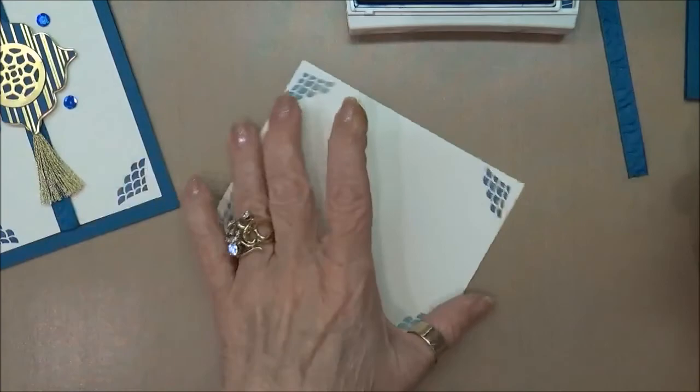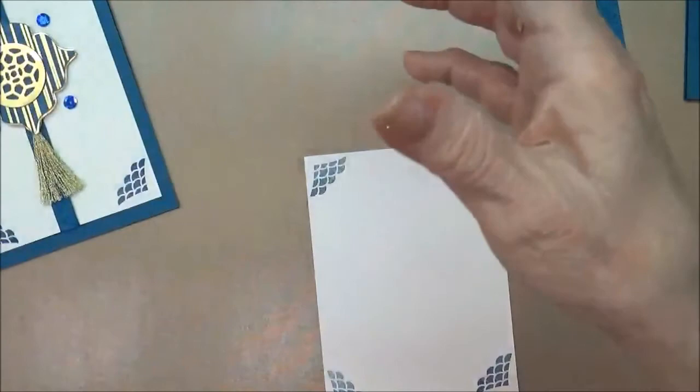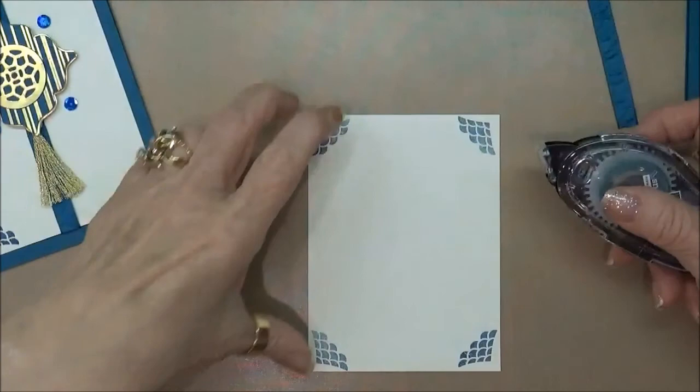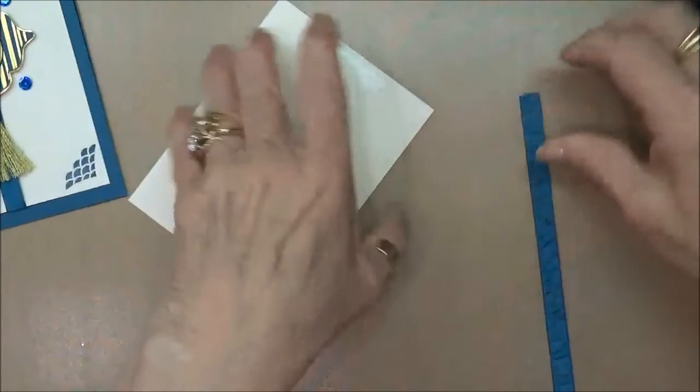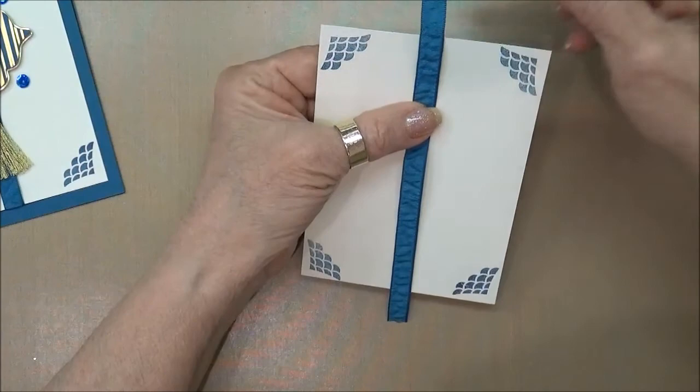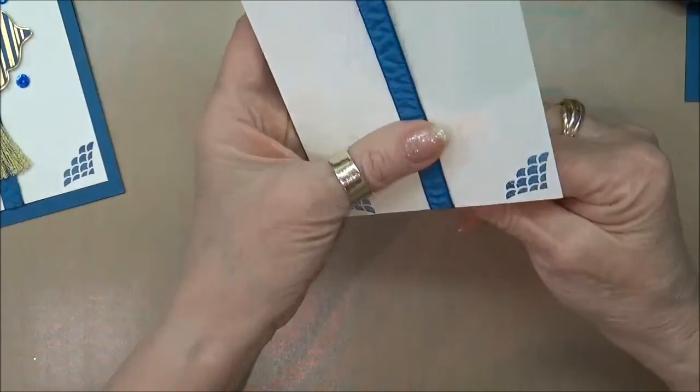Now we're going to take our snail adhesive and I'm going to attach my ribbon. I'm just going to run a little bit at the top and a strip at the bottom. Then you just take the ribbon, and what's really nice is the adhesive will hold the ribbon down nicely for you.